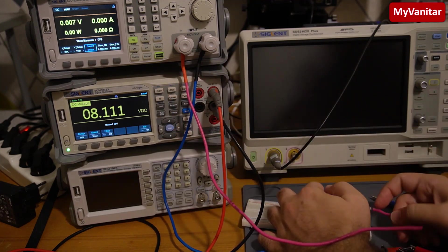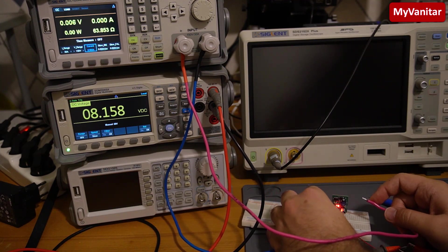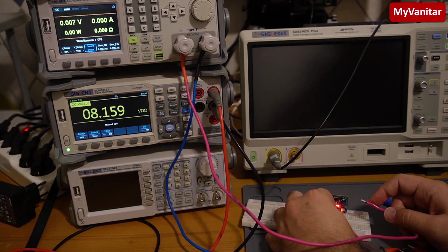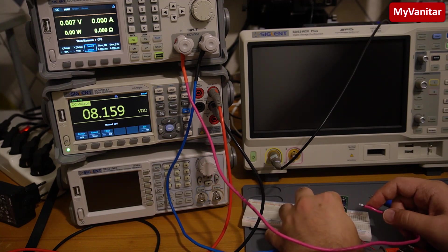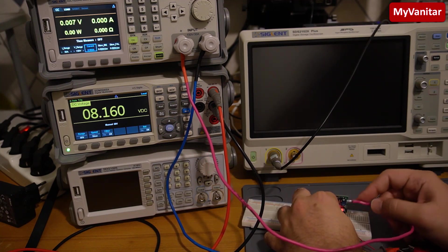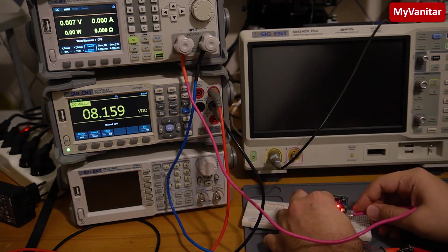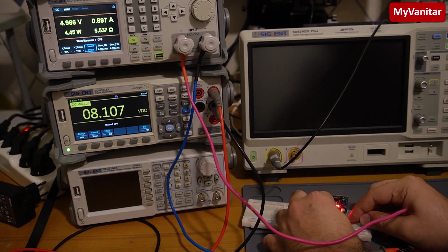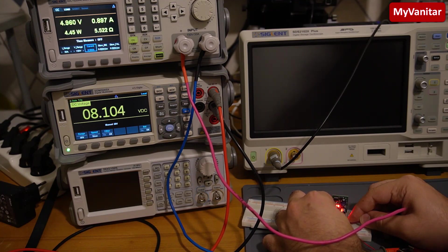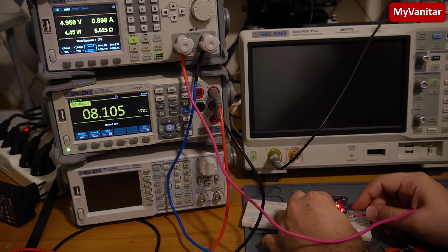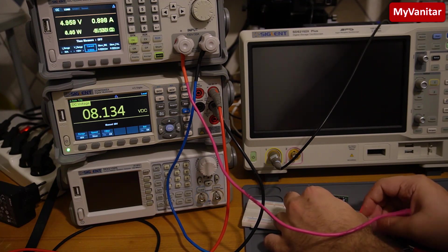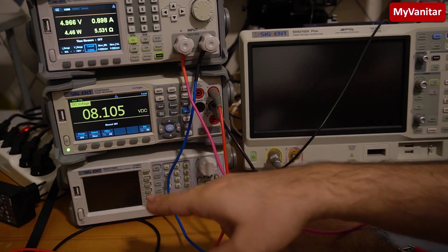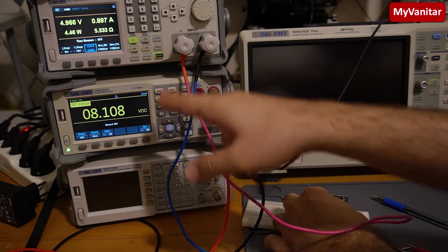Now, another complaint point was when the user apply the load instantly, the buck converter turns off itself. So let's make this experiment. So the load is on. Now I apply the load to the output. So no problem whatsoever. The buck converter can handle the current.